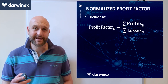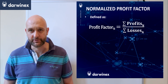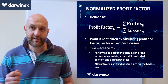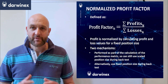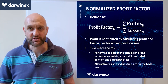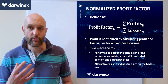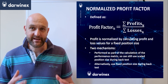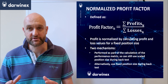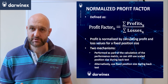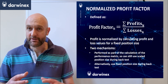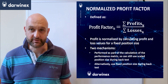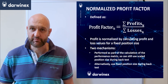Next we're going to look at a normalized version of profit factor that gets around these issues, and there are actually two ways we can do this. The first way is to adjust the values of the profits and losses from each trade, normalizing them against a standard position size — for example, one lot — stating what the profit or loss would have been if one lot had been placed on that trade. This means each trade contributes to the profit factor score with the same level of influence, so regardless of whether the trade was taken towards the end or the beginning of the backtest, it has equal relevance, rather than the bias seen in the standard calculation of profit factor.